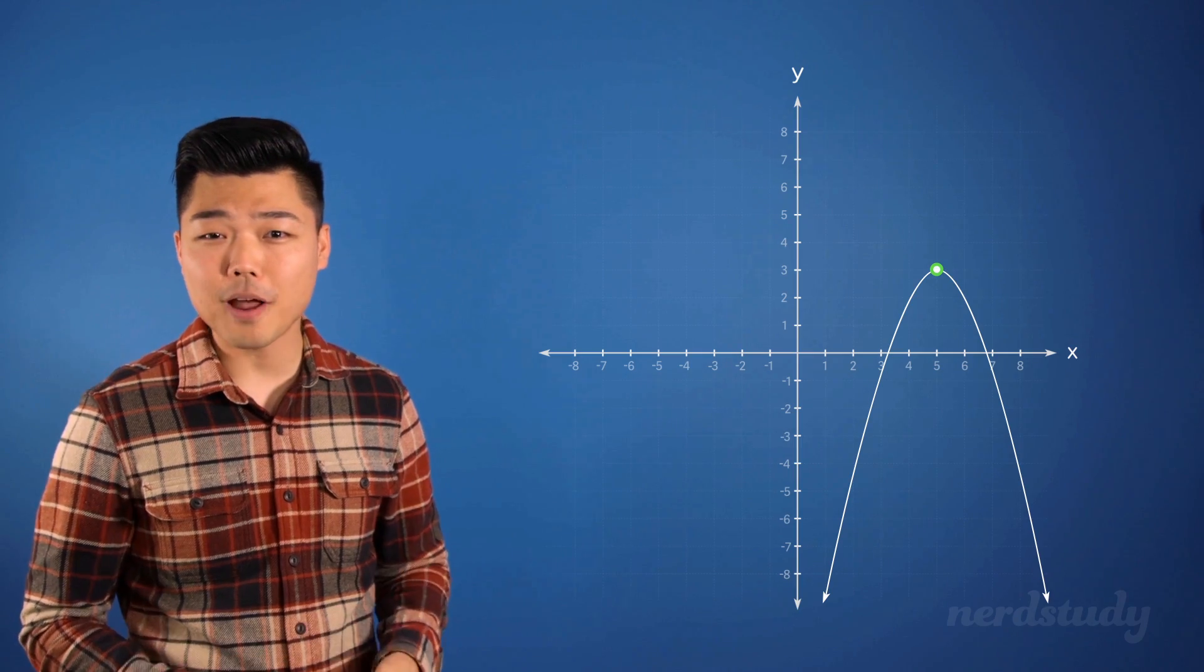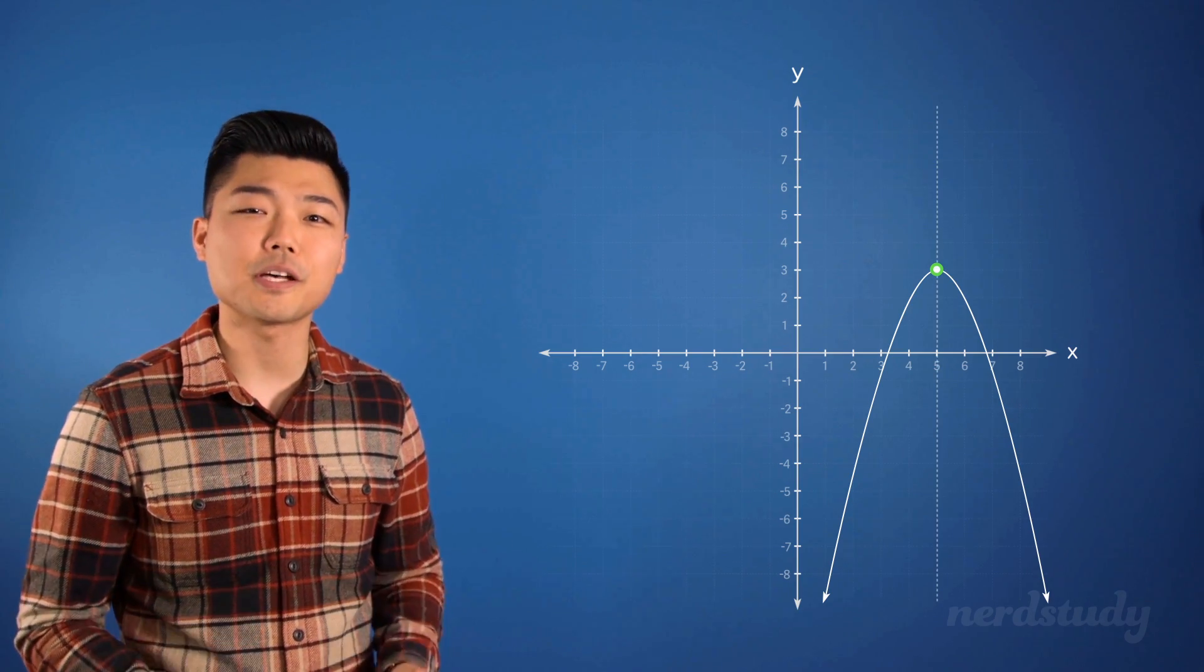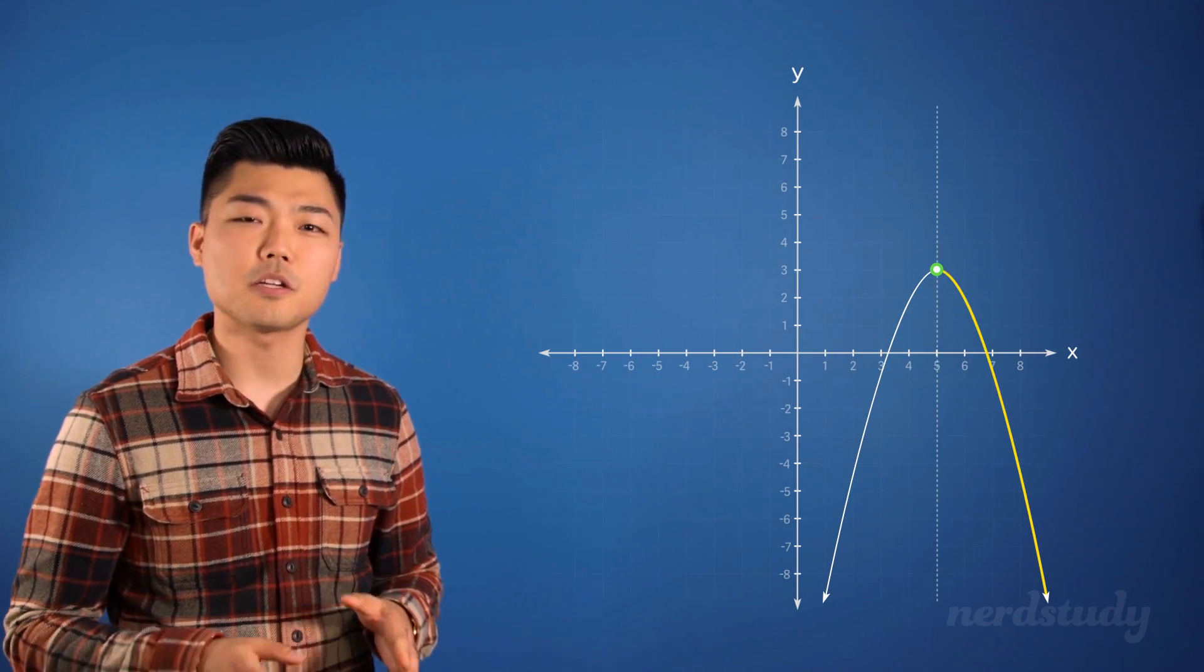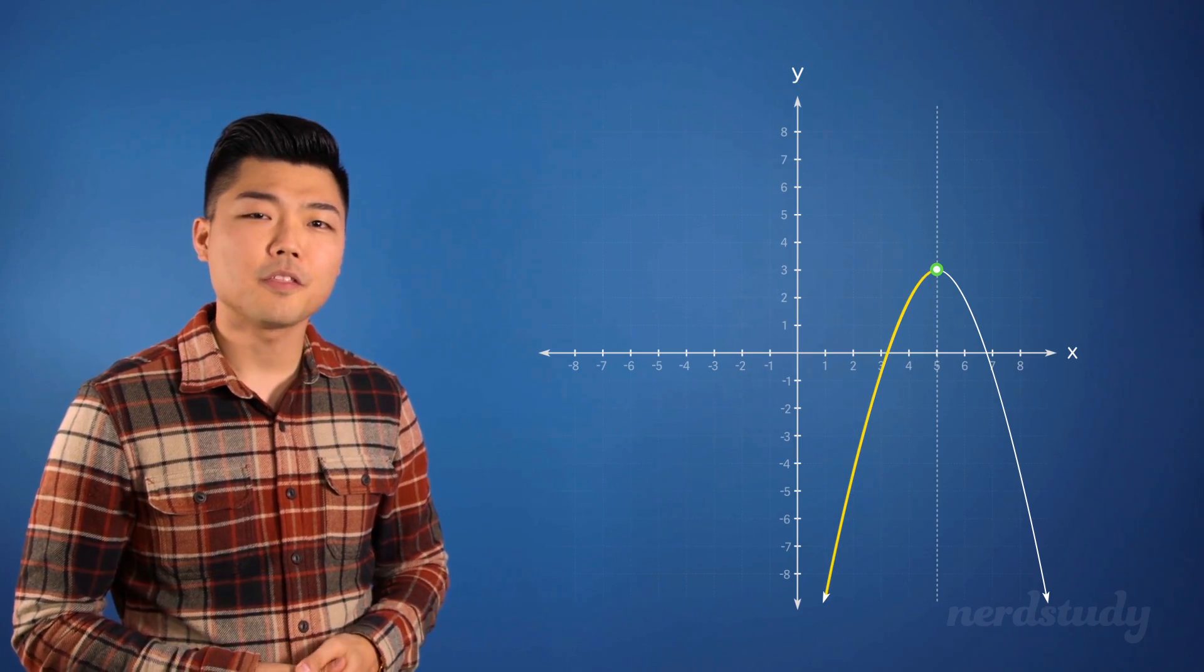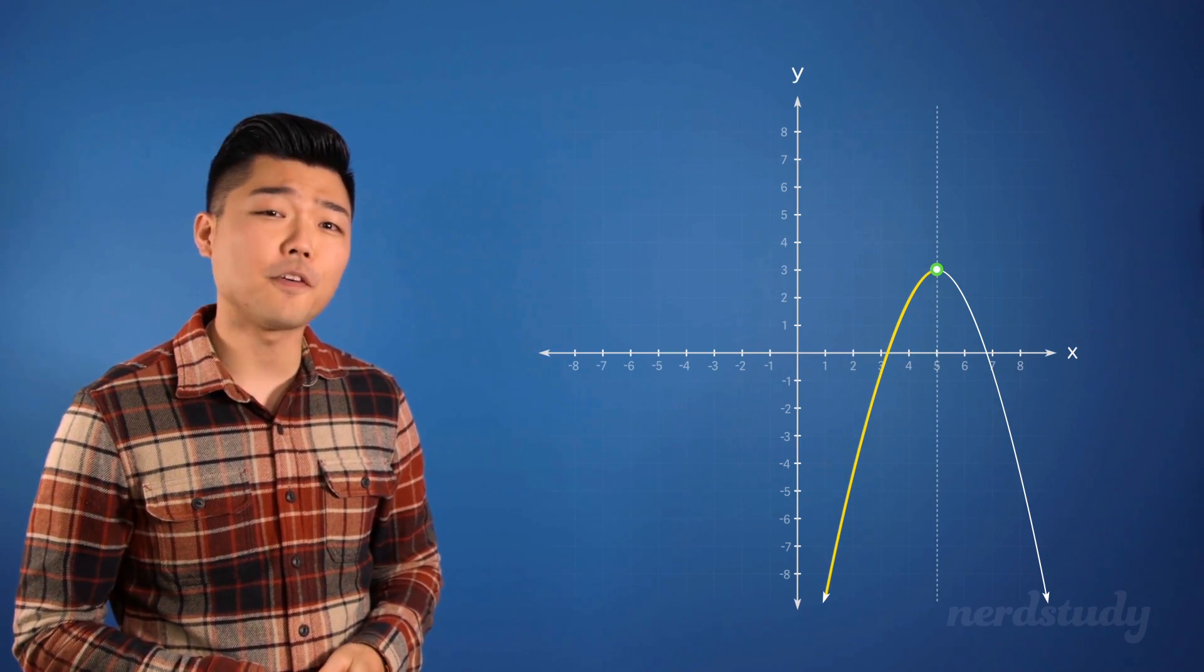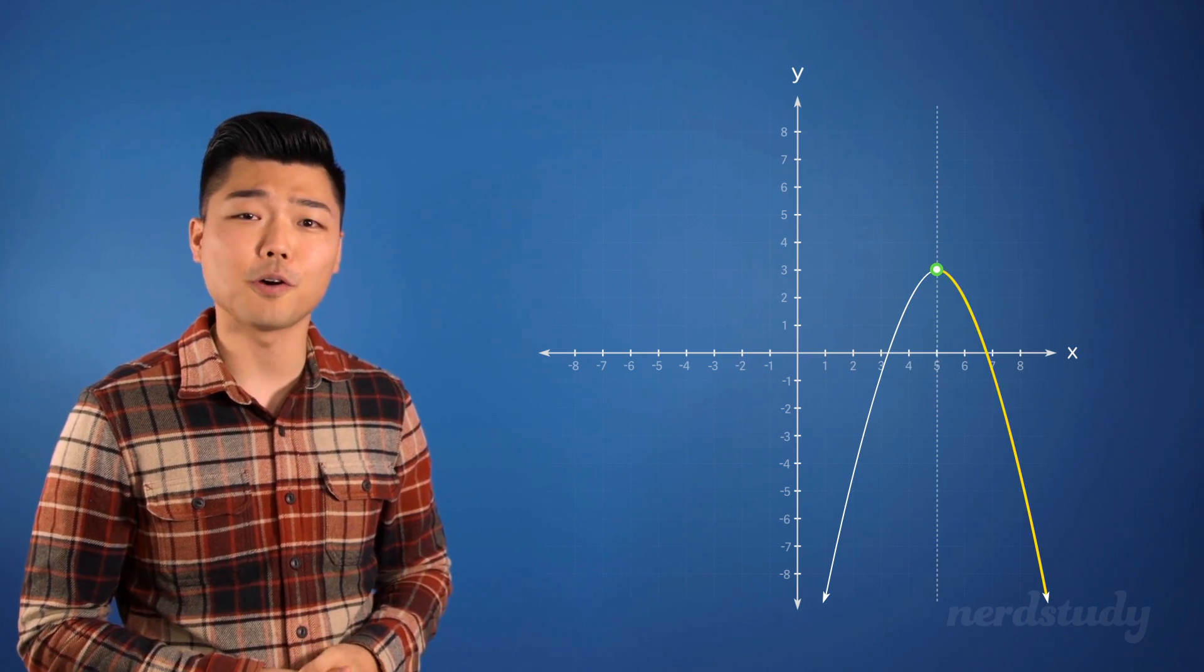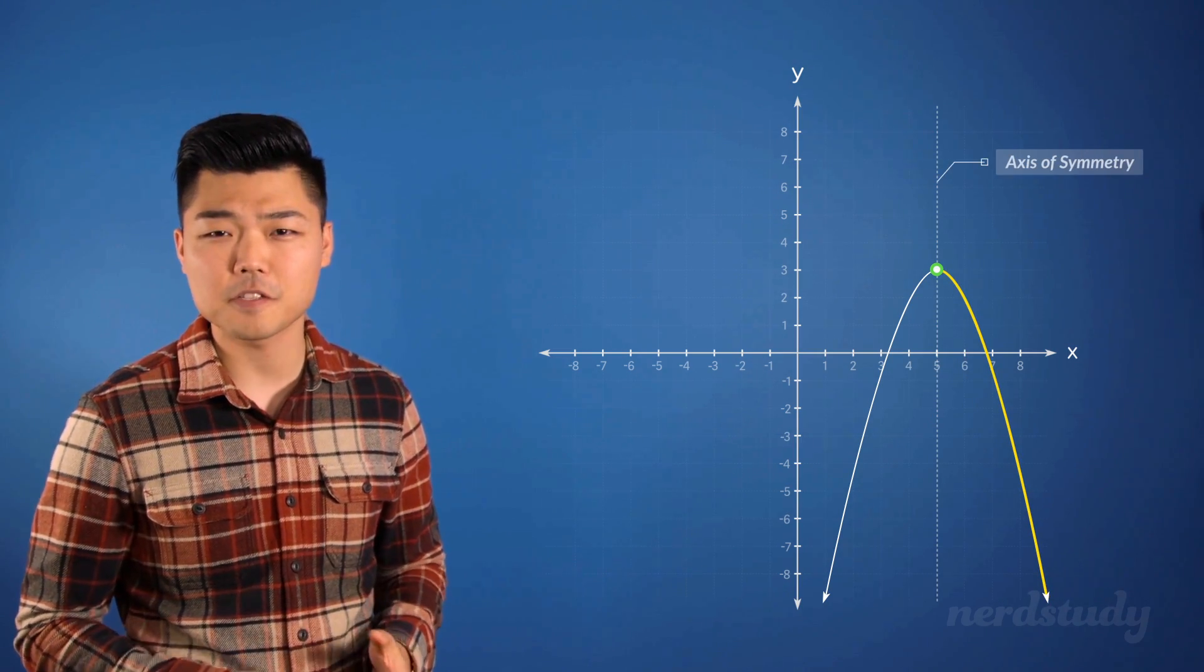Also, notice how the parabola is symmetrical to itself when it is seen as two halves. This imaginary vertical line that divides the symmetry of this parabola is called the axis of symmetry.